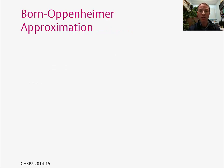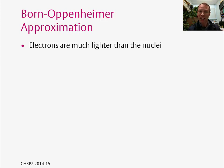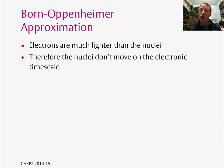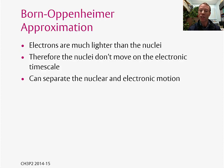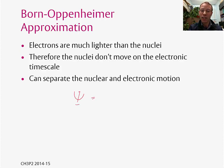The first thing we need to think about when considering electronic spectroscopy is the Born-Oppenheimer approximation. We know that electrons are much lighter than the nuclei — one proton is about 1800 times heavier than an electron. This means that the nuclei effectively don't move on the electronic timescale, and in turn this means we can separate the nuclear and electronic motion. In mathematical terms this corresponds to separating the total wave function into nuclear and electronic components.